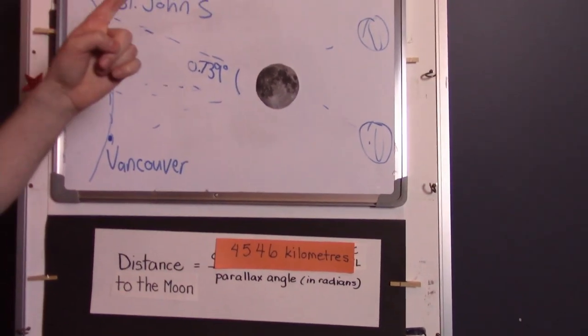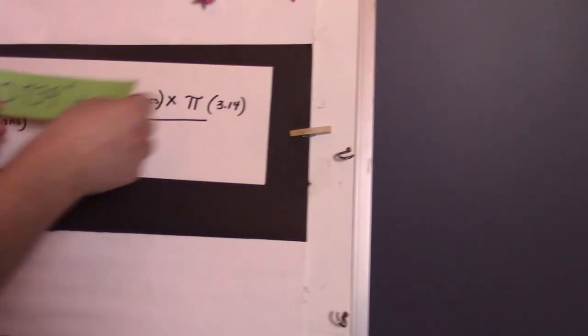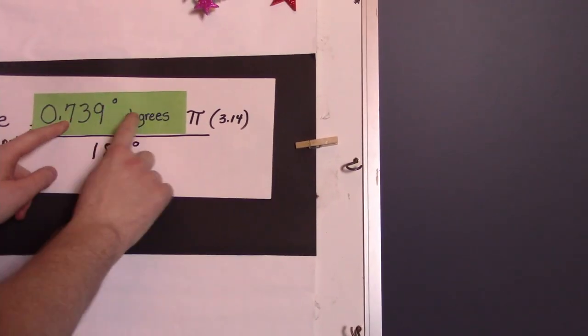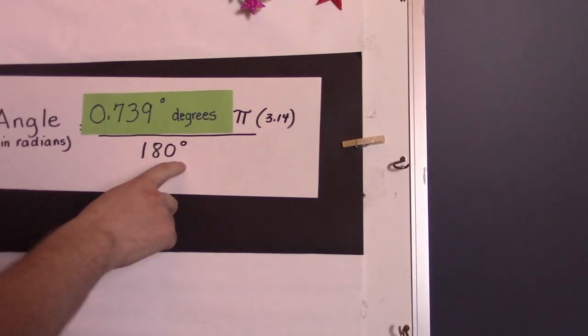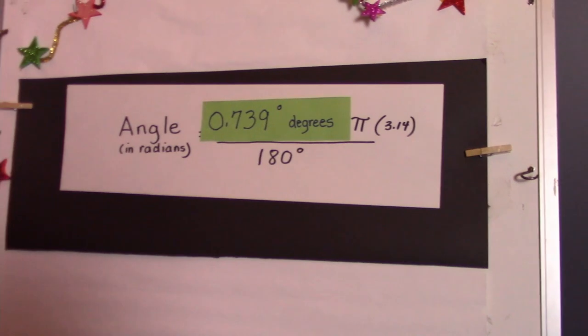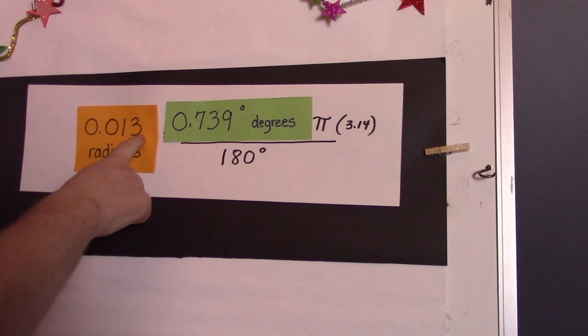And the angle we measured is 0.739 degrees multiplied by pi divided by 180 degrees. I calculated that to be 0.013 radians.